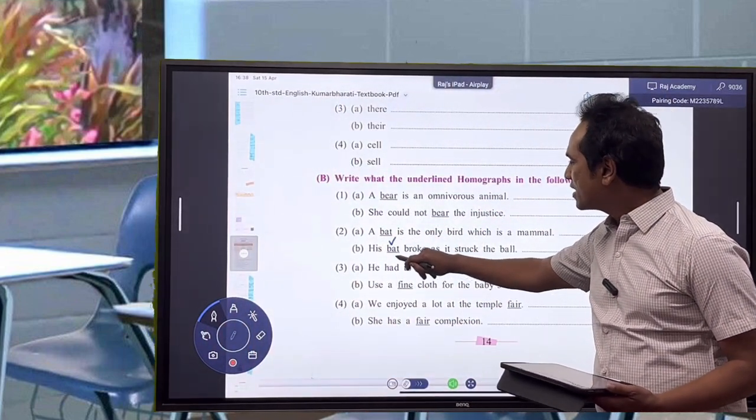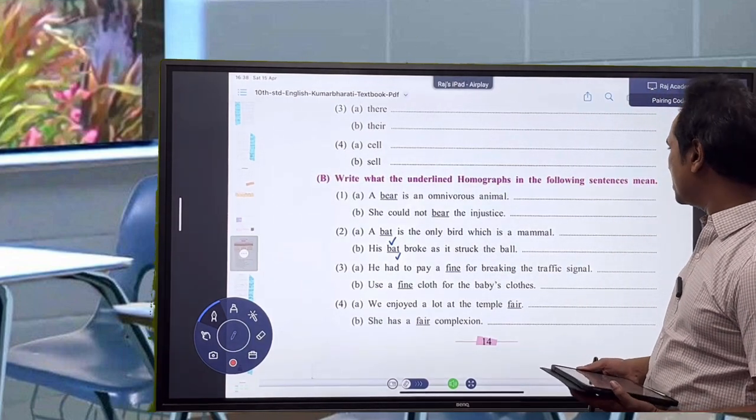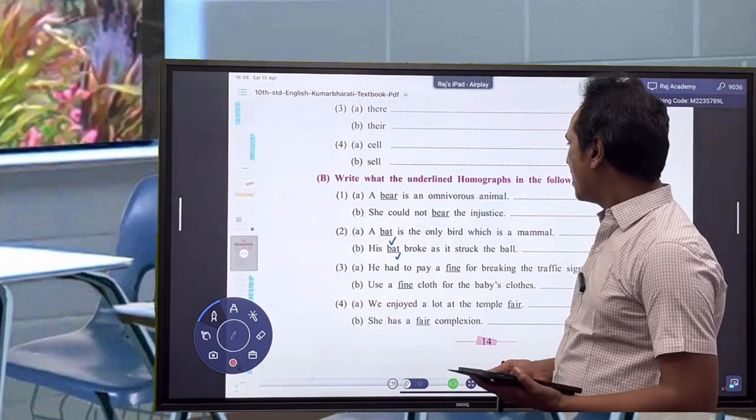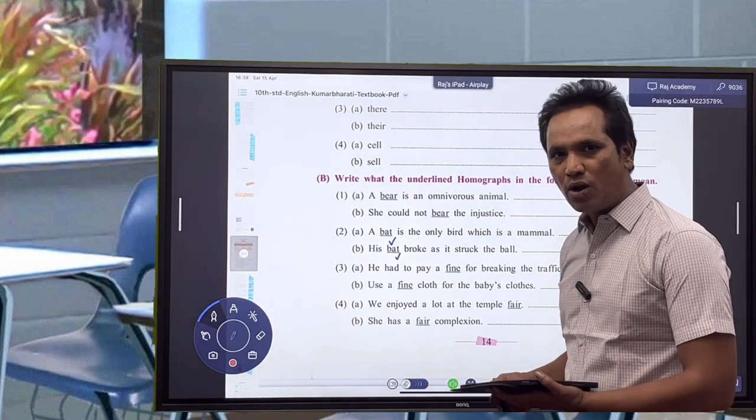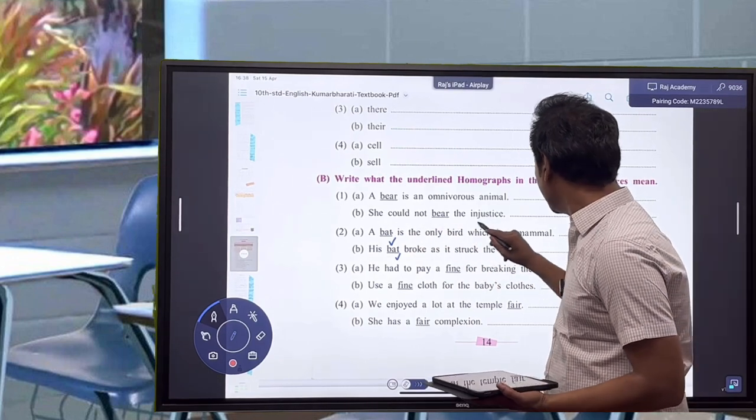What is the meaning of bat here and what is the meaning of bat in the second sentence? A bat is the only bird which is a mammal, and his bat broke as it struck the ball. So bat as a mammal here, and bat against the ball.